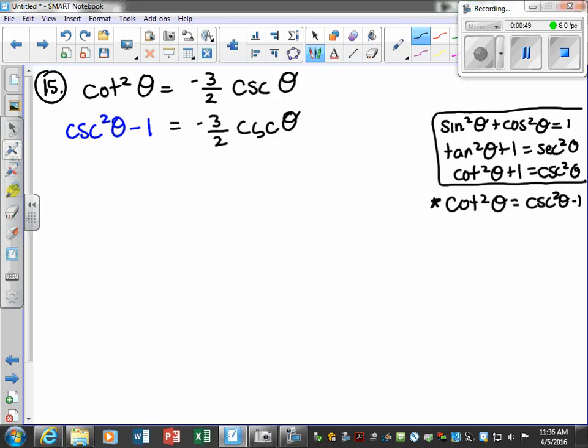Okay, now let's move everything to the left side to get this thing equal to zero so we can factor. So cosecant squared theta. If I have a negative three halves, move it to the other side. What's it become? Positive three halves cosecant theta. And then I still have this minus one. And now that's equal to zero.